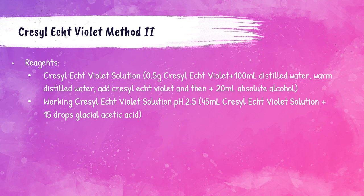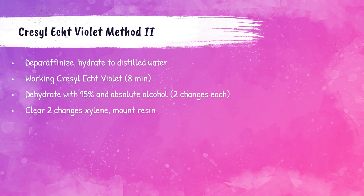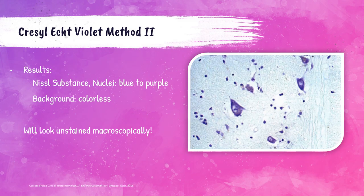Reagents for Cresyl Echt Violet Method 2 are Cresyl Echt Violet solution and working Cresyl Echt Violet solution at a pH of 2.5. Deparaffinize and hydrate to distilled water, stain with working Cresyl Echt Violet for 8 minutes, then dehydrate using two changes of 95% and absolute alcohol. Clear in two changes of xylene and mount in synthetic resin. Results are the same as Method 1: Nissl substance and nuclei are blue to purple and the background is colorless. Note: macroscopically the slides may appear unstained, so always check under a microscope.